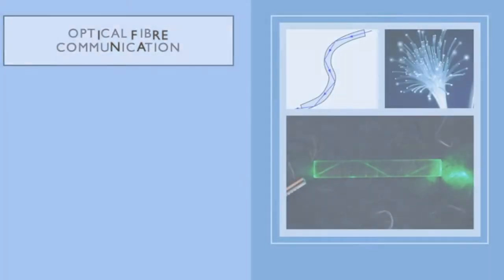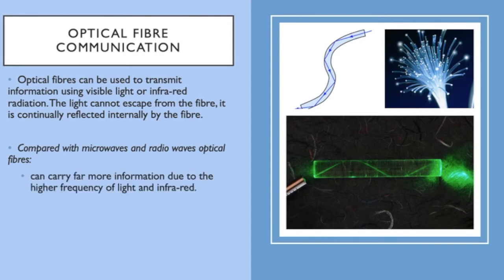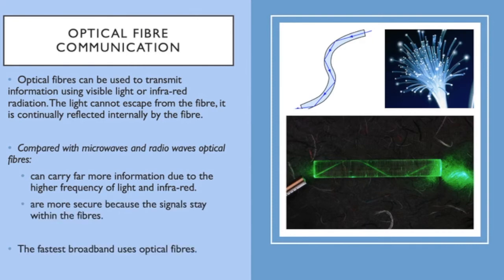So what is an optical fiber? An optical fiber can be used to transmit information using visible light or infrared radiation. The light cannot escape from the fiber - it's continually reflected internally by the fiber. Compared with microwaves and radio waves, optical fibers can carry far more information due to the high frequency of light and infrared, are more secure because the signals stay within the fibers, and the fastest broadband uses optical fibers.